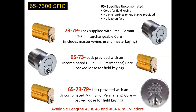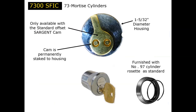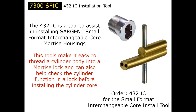The cams are also driven onto the back of the cylinders and cannot be changed in the field. We do not sell parts for them — they have to be ordered with the appropriate cam. When cylinders are provided less hardware or by themselves, we include the number 97 collar. And here's the other tool unique to small format called the 432IC, used to install and test the mortise cylinder inside the hardware.